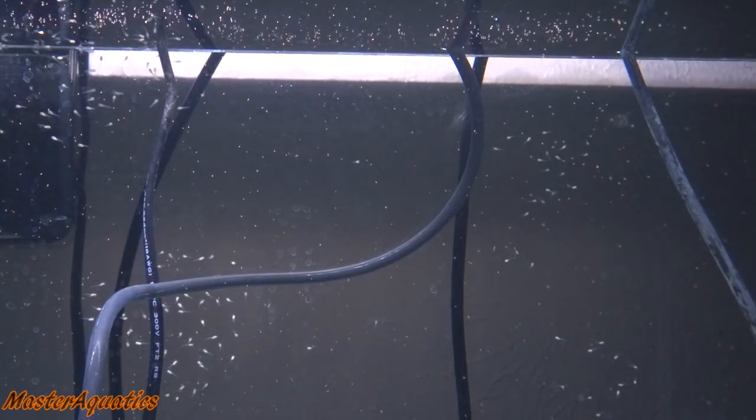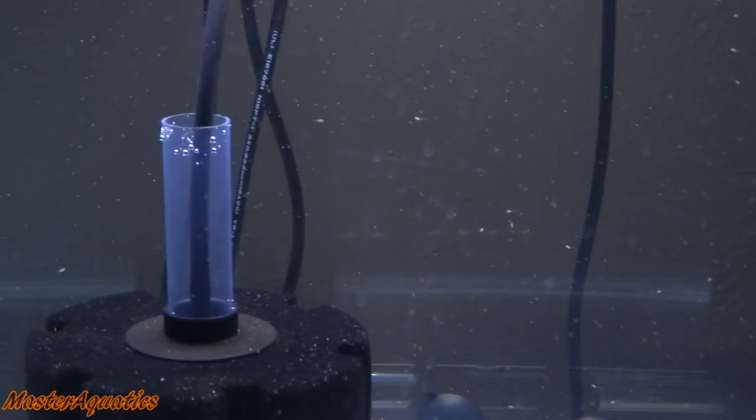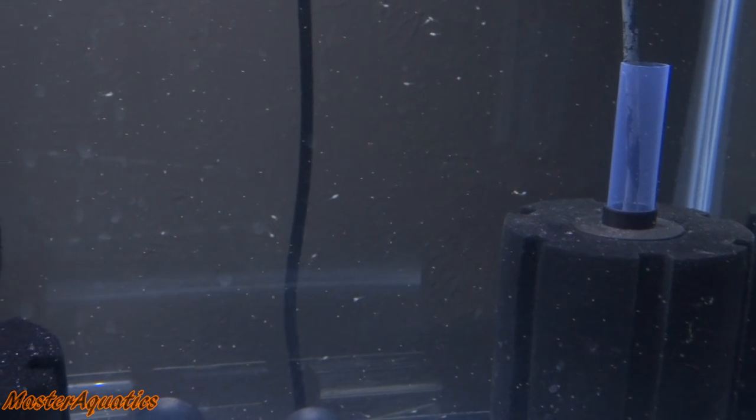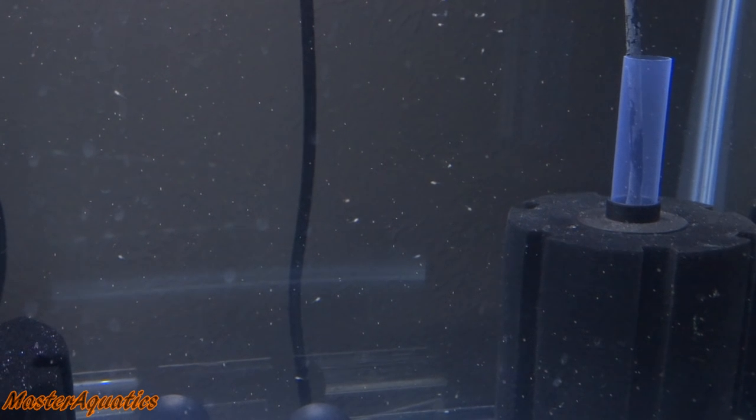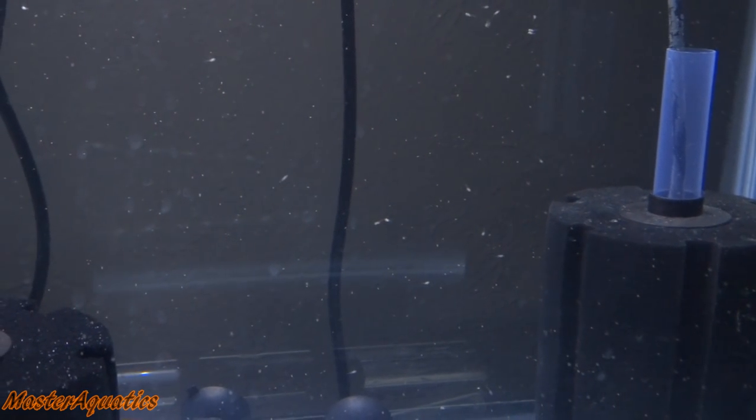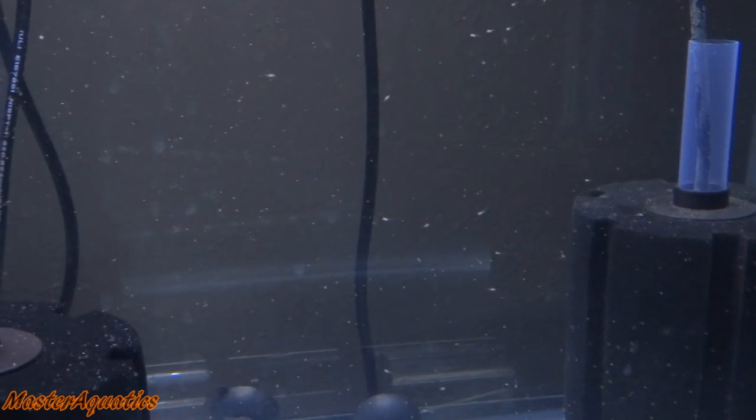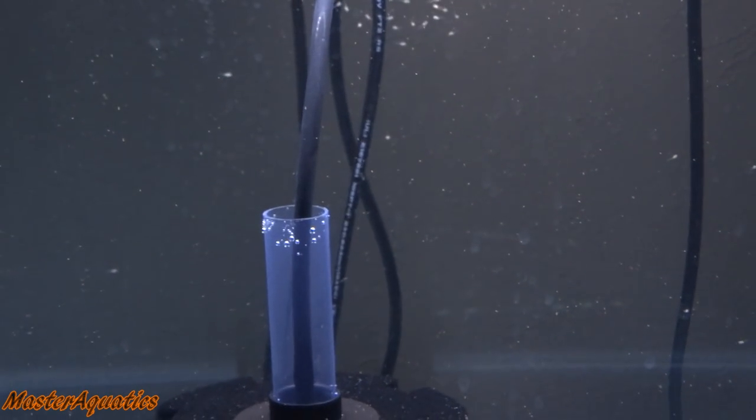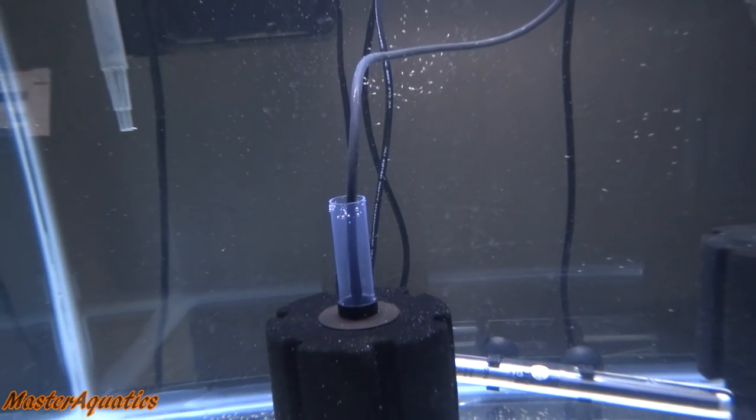You'll notice that the sponge filters are off. The reason I do this is because it's easier for them to go after the baby brine shrimp. There's not too much airflow restricting their movement. They're not being blown all over the place.